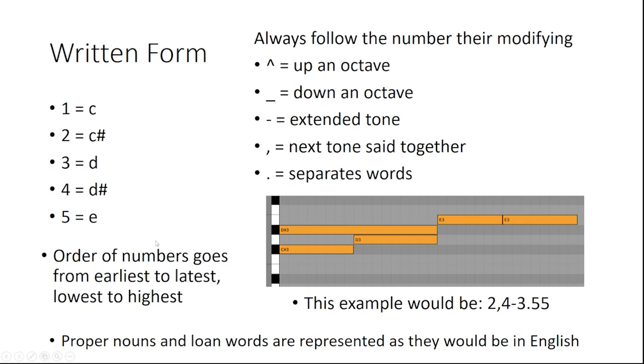Here's an example. So these two are both the earliest, but this one is the lowest, so that is written first. It's the C sharp tone, so it's written as 2. Since this one goes at the same time, there's a comma, and it's the fourth tone, so 4, and it extends for twice as long, so you put a dash.